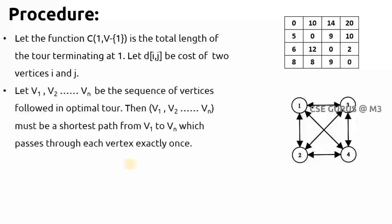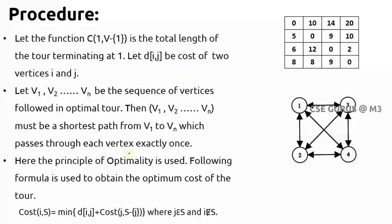Let V_1, V_2, up to V_n be the sequence of vertices followed in the optimal tour. Starting from vertex 1, let us suppose if I get that I need to visit 3, then V_2 will become 3, next V_3 is the next vertex to visit. This is the optimal tour path and again ends at V_1. Each vertex has to be visited exactly once.